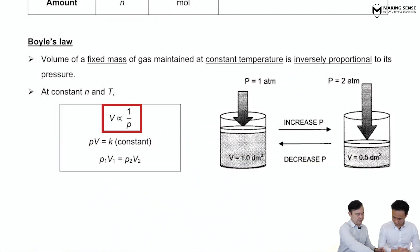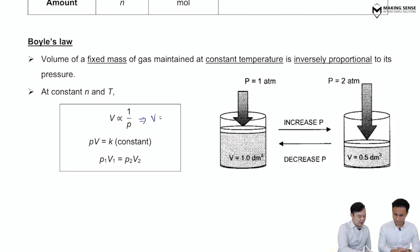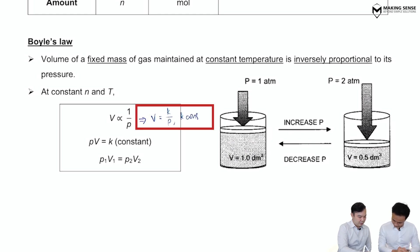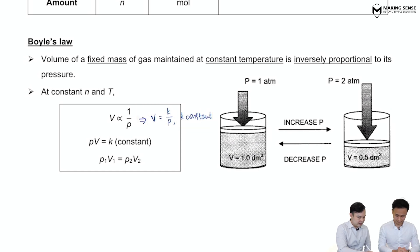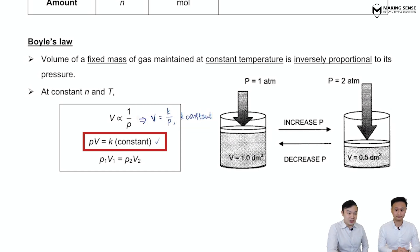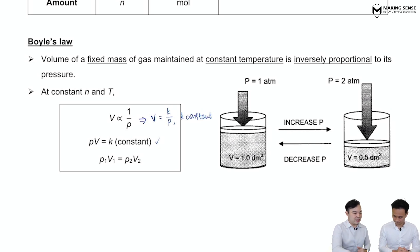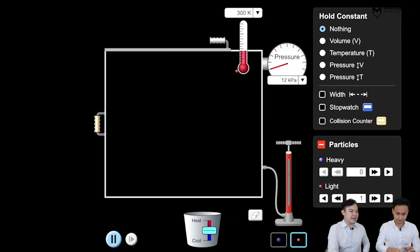So V is inversely proportional to P. Mathematically, we can write V = k/P, where k is a constant. Cross-multiplying gives us the very important relationship: P × V = k. This is Boyle's Law.